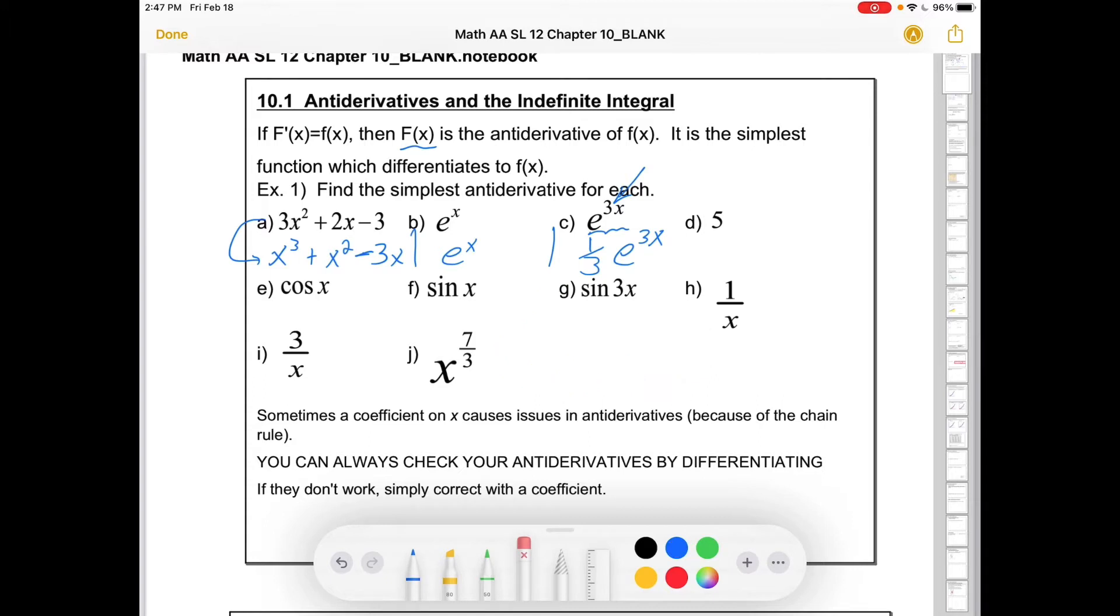We'll have some rules in a minute. But again, I just think it's worthwhile to guess and test these. Because if you know your differentiation really well, anti-differentiation can be very, very intuitive. So this one over here, 5, differentiates to 0. But it sort of comes from 5x. I like to think of it this way.